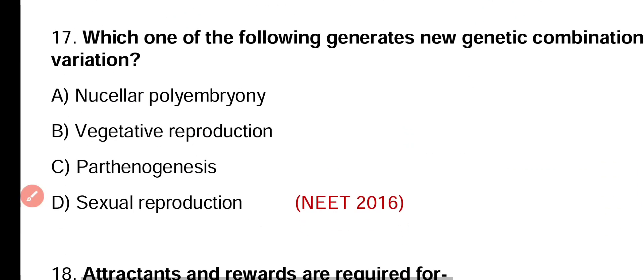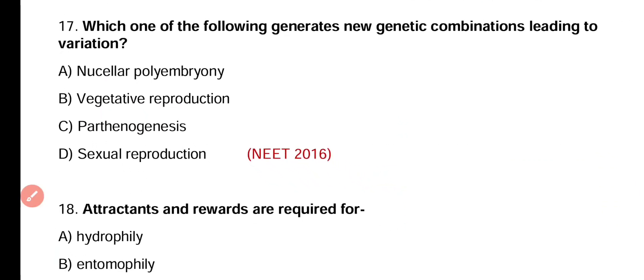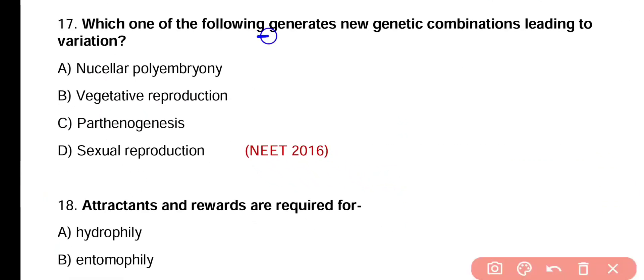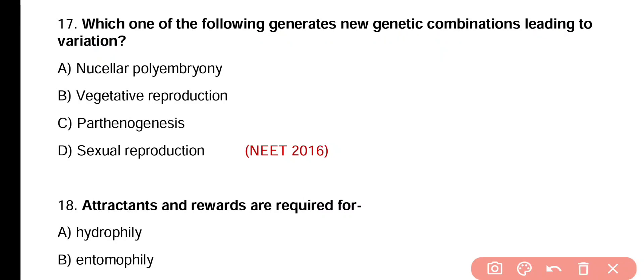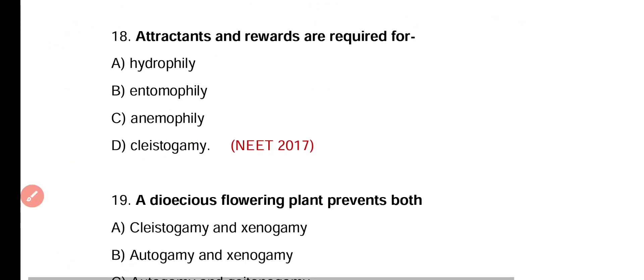Question number seventeen. Which one of the following generates new genetic recombination leading to variation? Nucellular polyembryony, vegetative reproduction, parthenogenesis, or sexual reproduction. Correct answer is option D. Sexual reproduction is responsible for producing new genetic recombination which leads to variation.